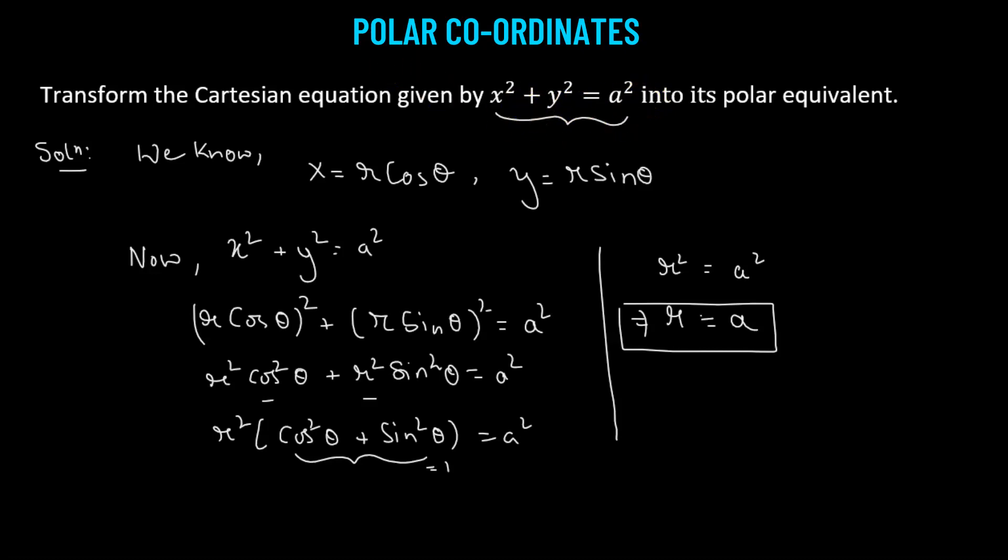Now, if we want to understand it graphically, x squared plus y squared equals a squared is the equation of a circle with center at the origin (0,0), and it has a radius of a units. So that's the equation of a circle.